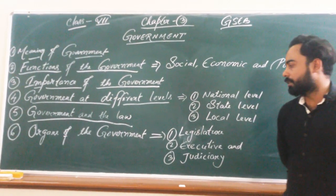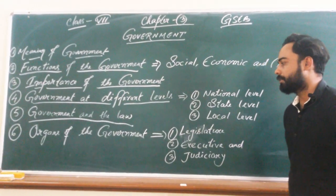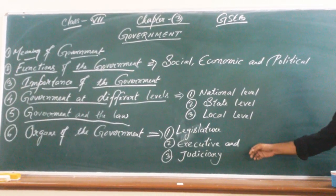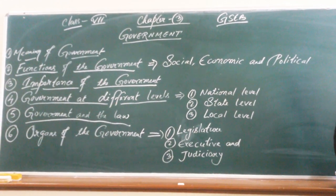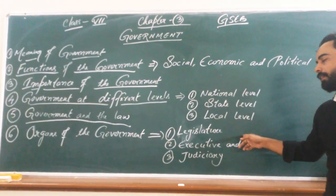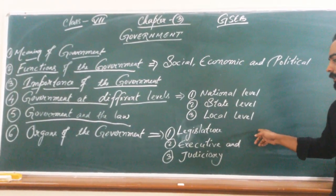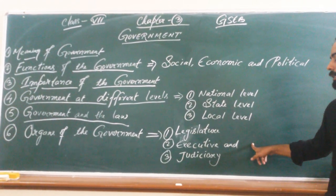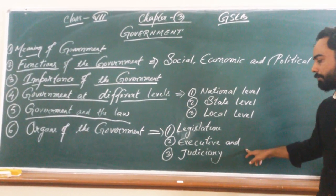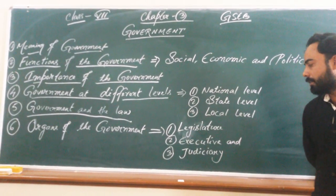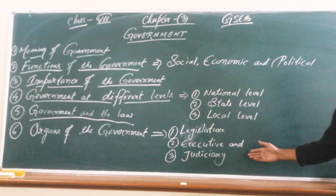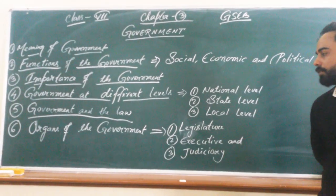The last topic is the organs of the government. There are three organs of the government: legislature, executive, and judiciary. The work of the legislature is to make laws, and those laws have to be implemented and executed by the executive. The judiciary ensures that people follow the rules, and those who do not abide by the rules are punishable by the judiciary.